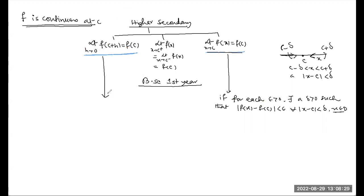How will we make it? Let's construct it step by step. If you don't have x close to c, then f(x) close to f(c) — what will happen next? If x approaches c, then we substitute h, and h tends to 0.